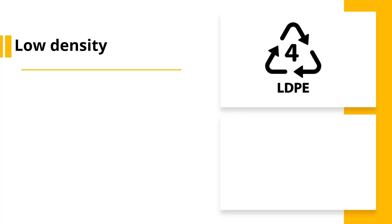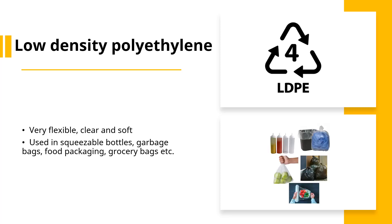Number 4 is given to low density polyethylene. Low density polyethylene is a much more flexible, cleaner and softer version of HDPE. It is most often used where flexibility and transparency are important properties, like food packaging, cling wrap, squeezeable bottles, bubble wrap, garbage bags, grocery bags and beverage cups.